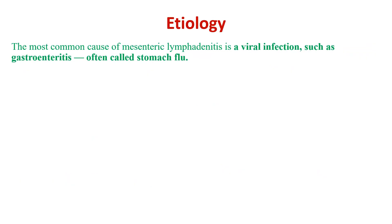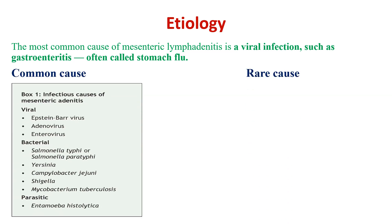The most common cause of mesenteric lymphadenitis is a viral infection, such as gastroenteritis, often called stomach flu. The most common viral etiologies are Epstein-Barr virus, adenovirus, and enterovirus.